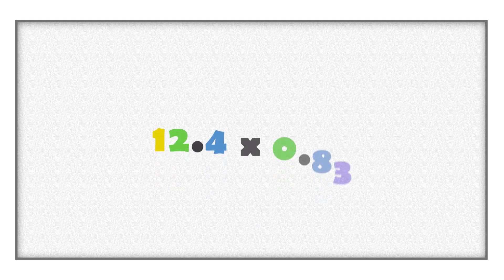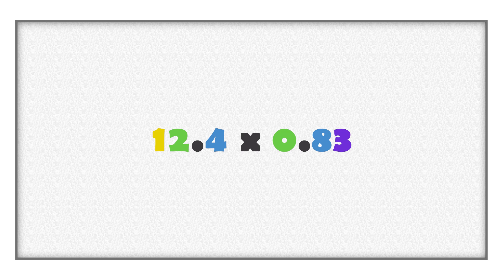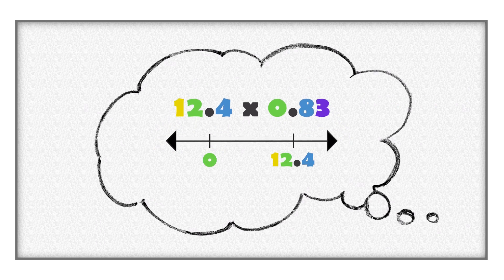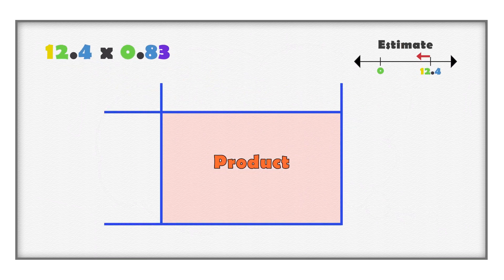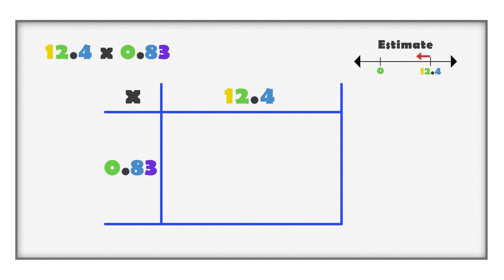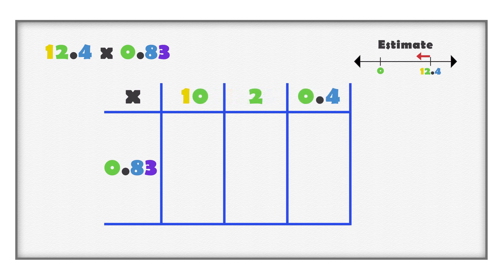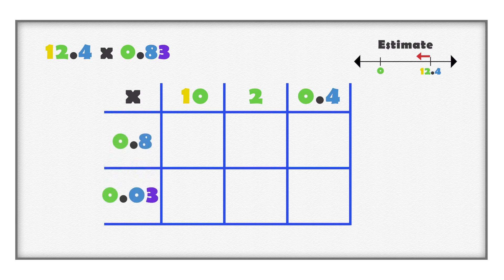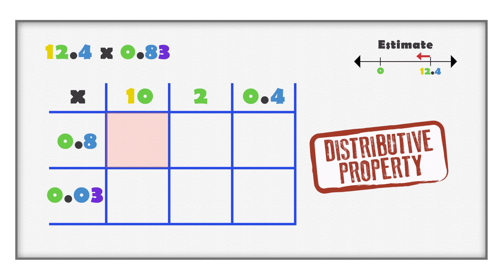Here is another example: twelve and four tenths multiplied with eighty-three hundredths. Eighty-three hundredths is part of a whole. When you multiply twelve and four tenths by part of a whole, the product will be smaller than twelve and four tenths. An estimate is a value less than twelve and four tenths. Use an array model to organize digits and multiply the decimal number in parts. Organize the digits of each decimal by its place value. Twelve and four tenths has three digits; label one side with ten, two and four tenths, and the other side with eight tenths and three hundredths.